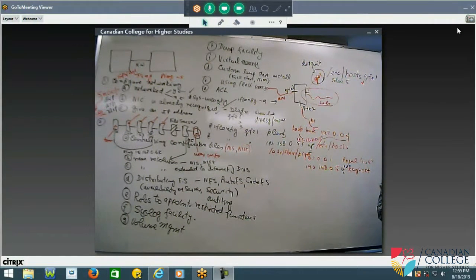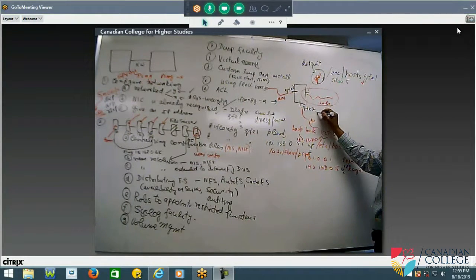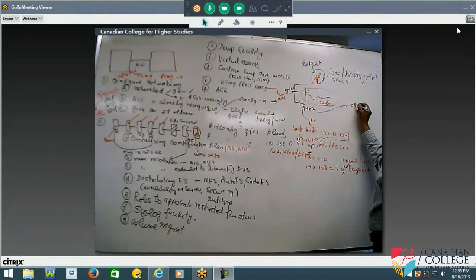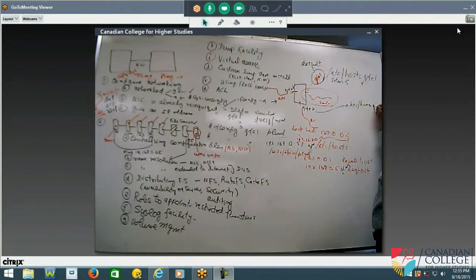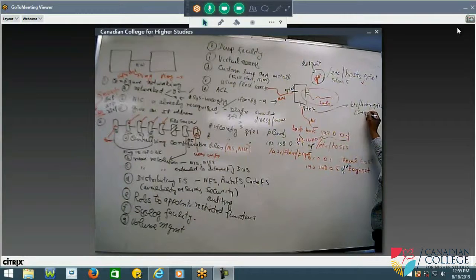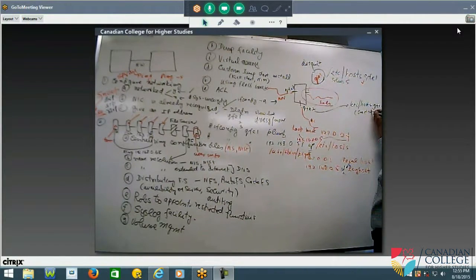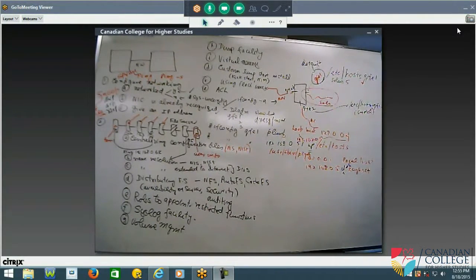Only for the one you selected, it will be created automatically. Can I create one for this? Yes. Okay. ETC host dot QFE two. So this has to be created. And what do you like to put inside this? What do you like to put inside this? The network address. Not network address.